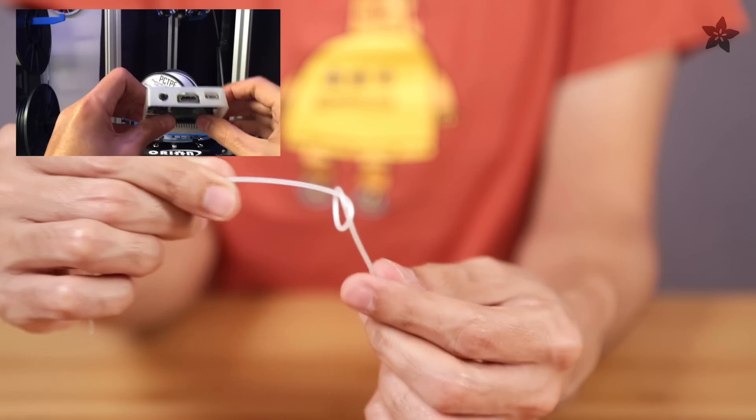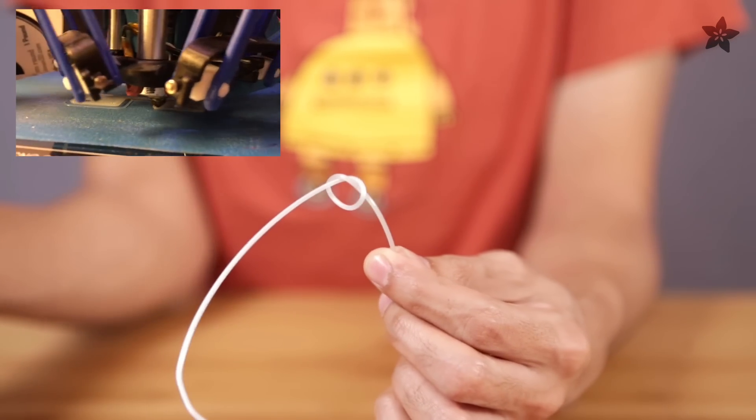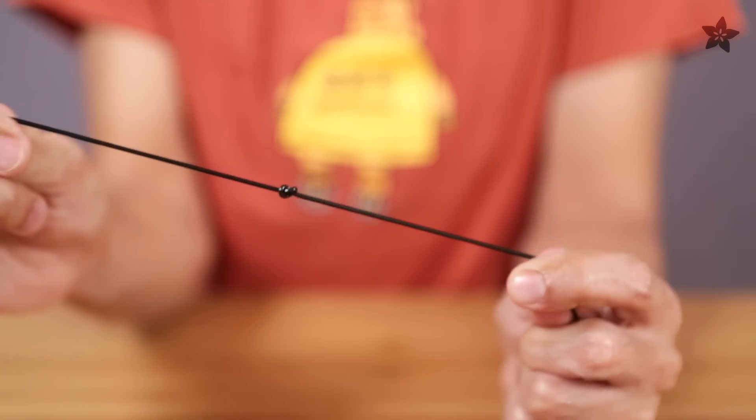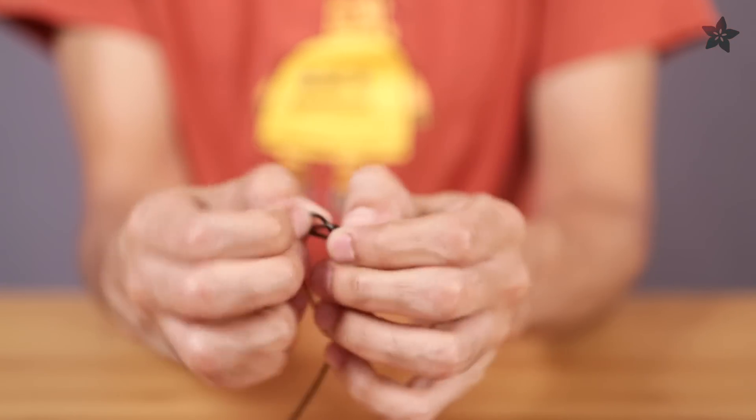PCTPE is more rigid but far less flexible. The plus is that it works with Bowden drive systems. Semiflex on the other hand is able to tie the knot and still maintain rigidity, but it still doesn't work on Bowden systems. Trust me, we really tried.